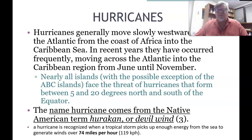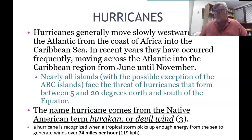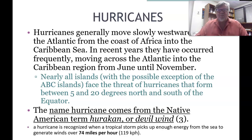Nearly all the islands, with the possible exception of the ABC islands — the Dutch islands near Venezuela: Aruba, Bonaire, and Curaçao — face the threat of hurricanes that form between 5 and 20 degrees north and south of the equator. The name hurricane comes from a Native American term, 'huracan,' which meant devil wind. A hurricane is recognized when a tropical storm picks up enough energy from the sea to generate winds of over 74 miles per hour.